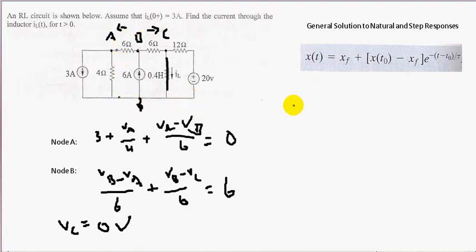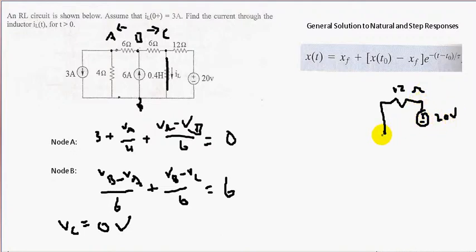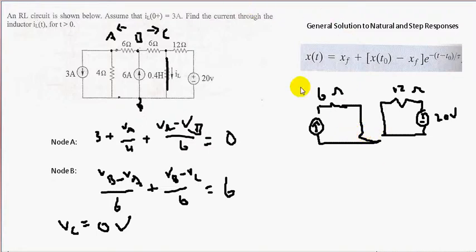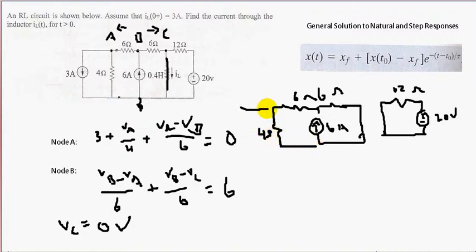What you're looking at is essentially two circuits. We have the right side with a 12-ohm resistor and a 20-volt voltage source. And the left side has six ohms and a six-amp current source. On the other side, we have four ohms and a three-amp current source. This right circuit is just a simple one-resistor circuit, so let's find IL1.